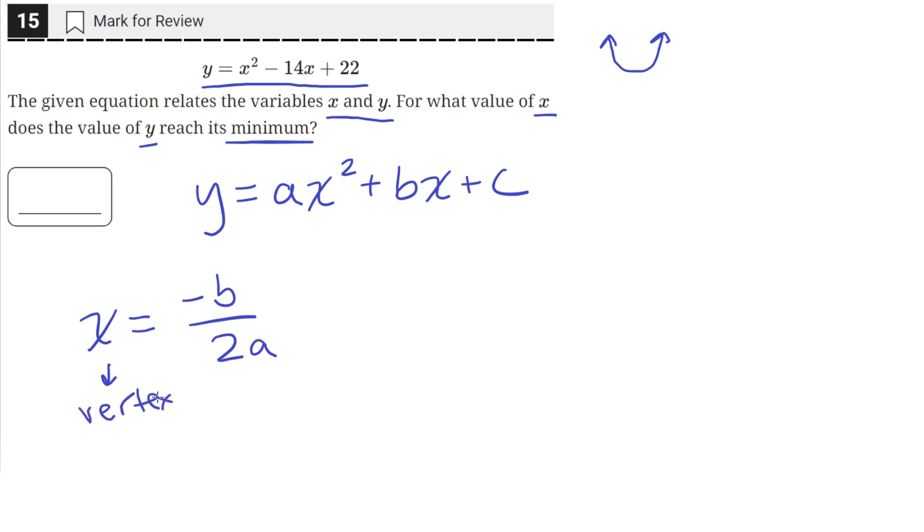The vertex of a quadratic is this point here for a concave up quadratic, like this quadratic in this case. And then for concave down quadratics, the vertex is this point here.